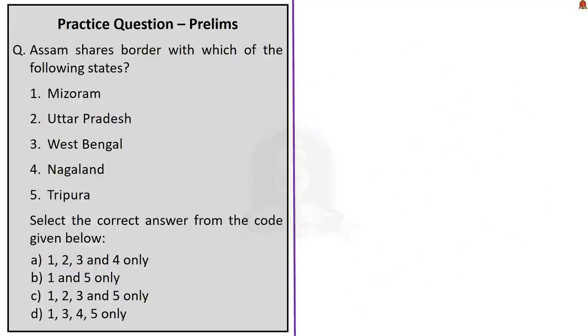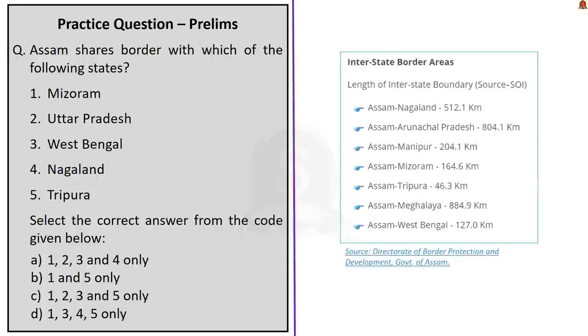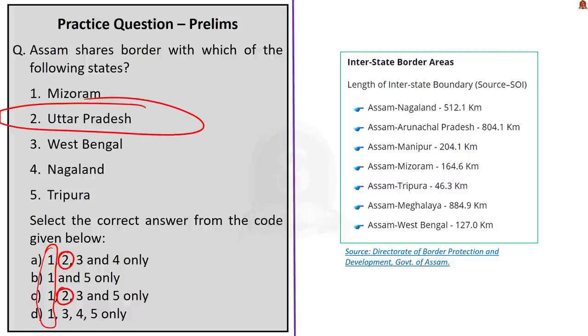This next question is a map based question. It asks, Assam shares border with which of the following states? The options given are Mizoram, Uttar Pradesh, West Bengal, Nagaland, Tripura. One is present in all the options so obviously one is correct. If you know the map of India you can assume where Assam is and where Uttar Pradesh is. Even if you are confused with all other options, if you know that Uttar Pradesh does not share border with Assam, which we should definitely know, then we can eliminate options A and C. Remaining are B and D. Three is West Bengal and four is Nagaland. Nagaland definitely shares border with Assam because we saw that already border disputes are going on between both these states. That is why the correct answer is option D, 1, 3, 4 and 5 only.